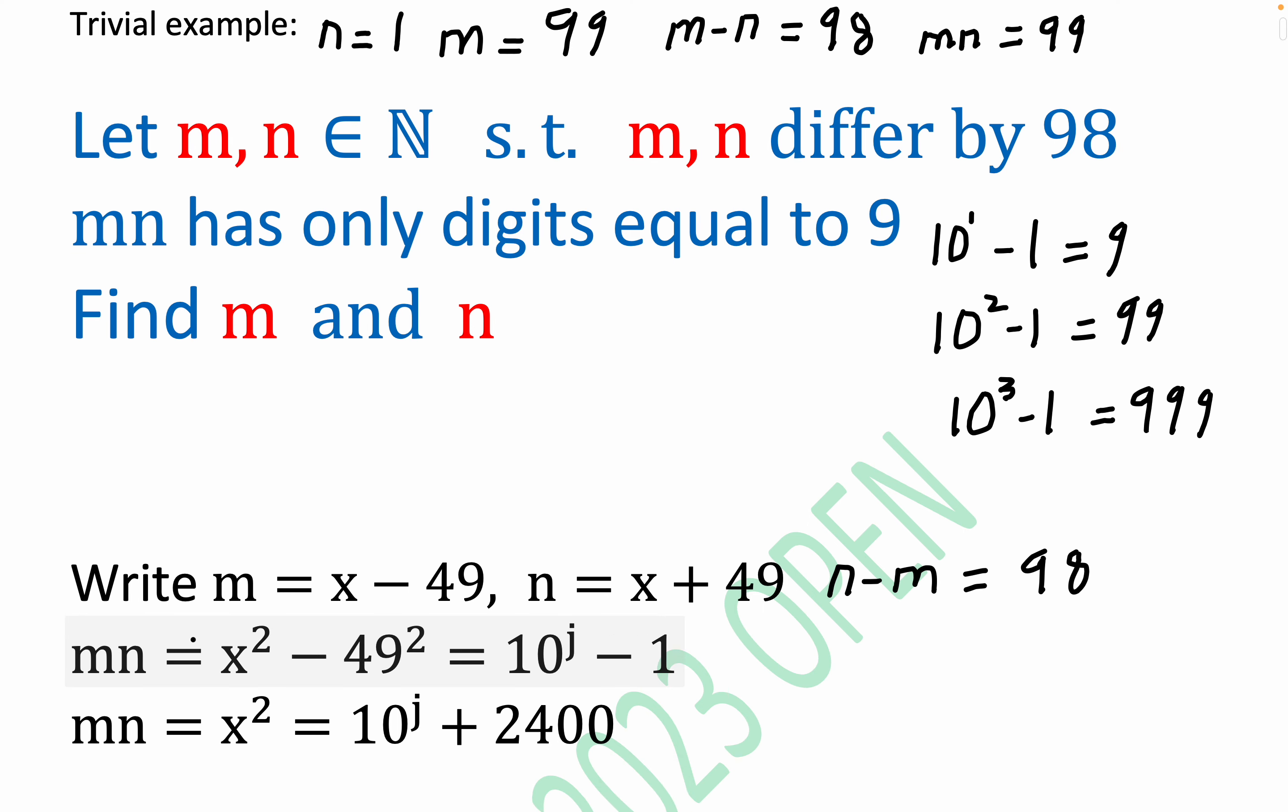And also, the product has to be equal to something of this form, 10 raised to the j. And j, of course, is equal to 1, 2, 3, 4. j's are natural numbers. Notice that we use the difference of two squares result. m minus n is equal to x squared minus 49 squared.